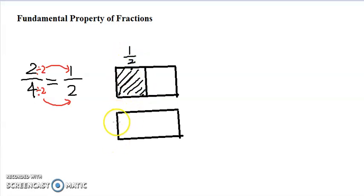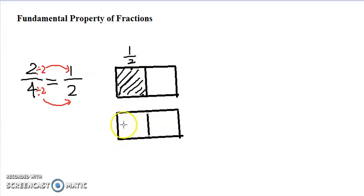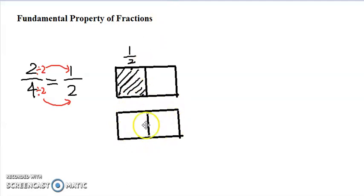Now similarly, if we take the box, we can divide it — first we do the same thing, divide it into 2 equal parts, and this piece right here will be the same as that — it will be 1 half. But what if I take each equal part and divide it into another 2 equal parts?